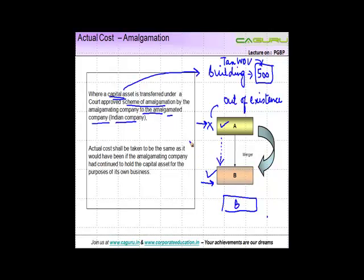Actual cost shall be taken to be the same as it would have been if the amalgamating company had continued to hold the capital asset for the purpose of its own business. This means that the value of this capital asset will be the same which in the amalgamating